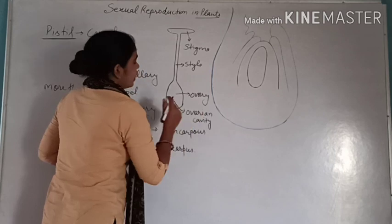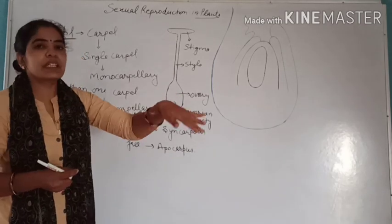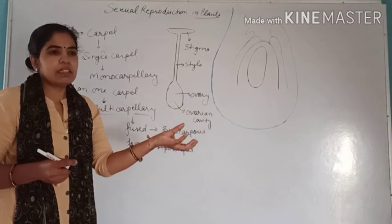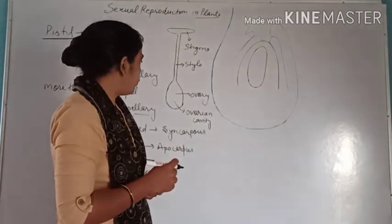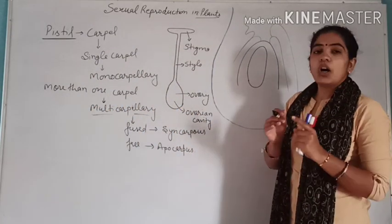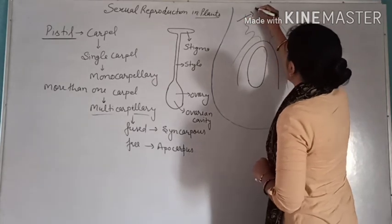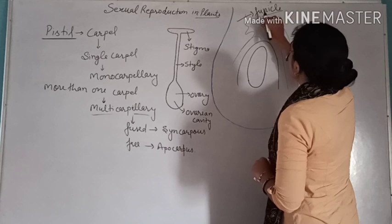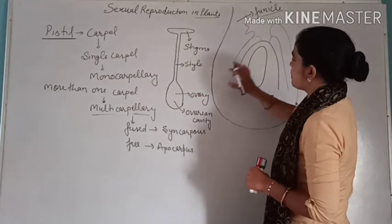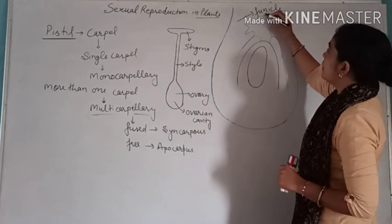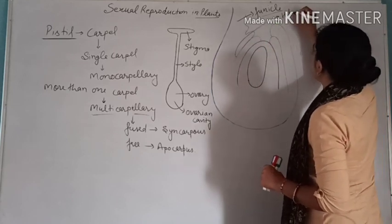Inside the ovarian cavity, the placenta is present, and from the placenta the ovule is attached — or from the placenta the megasporangia or ovule arises. This megasporangia or ovule is attached with the placenta through a stalk-like structure that is called the funicle. As you can see in this diagram, the funicle gets attached with the placenta, and placenta gets attached with the ovary. The funicle also gets attached with the ovule, and that junction or connection between the funicle and the ovule is called the hilum.